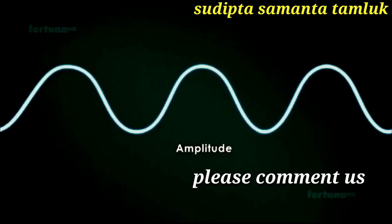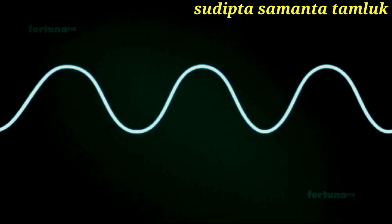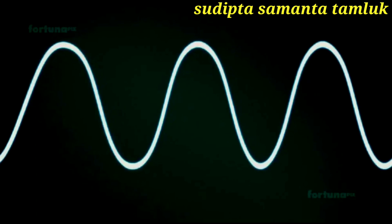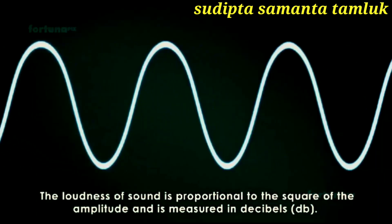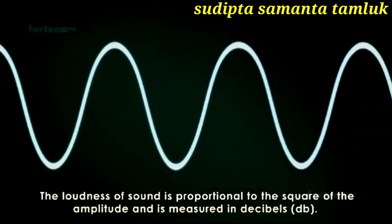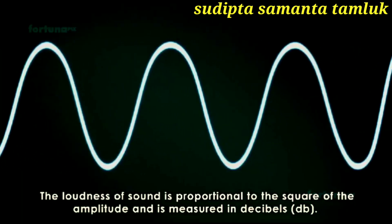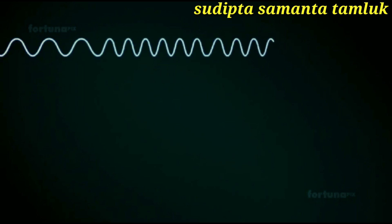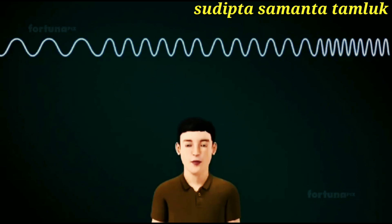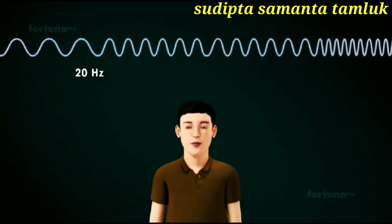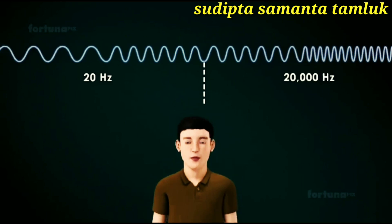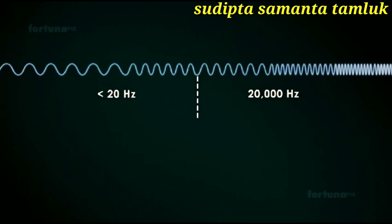A sound wave's amplitude is the height between the topmost part of the wave, the peak, and the bottommost part, the trough. When the amplitude is high, the sound will be louder. The loudness of sound is proportional to the square of the amplitude and is measured in decibels (dB). The frequency of waves does not change regardless of the medium. The human ear can perceive sounds between 20 Hz and 20,000 Hz. Sounds below 20 Hz are infrasonic, while sounds above 20,000 Hz are ultrasonic.